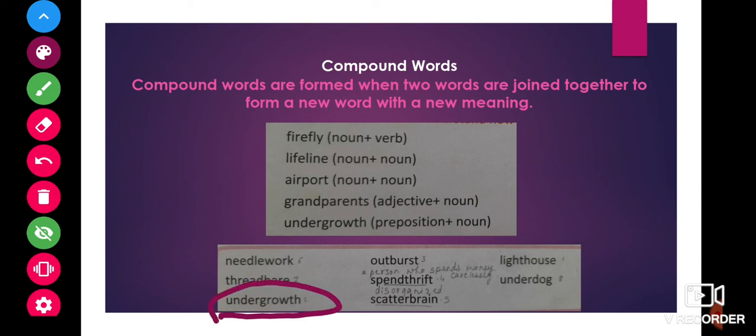Undergrowth is also a compound word. Undergrowth means growth of bushes or grass under the trees. It is a compound word as well. Scatterbrain. Scatterbrain is also a compound word made from two words scatter and brain. Scatterbrain means somebody who is disorganized or somebody who misplaces things frequently.